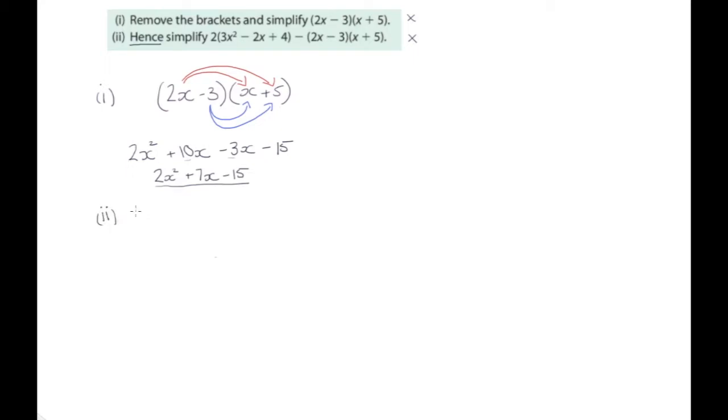Let's write it out: 2(3x² - 2x + 4) - (2x - 3)(x + 5). If we look at this bit here, that is exactly the same as this bit here. So that means we can use this and we don't have to do all of this all over again. But we do need to be careful of this minus and I'll explain that in a moment.